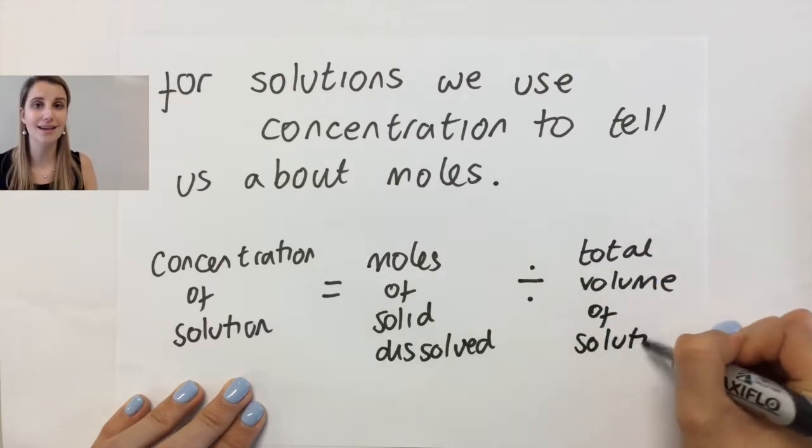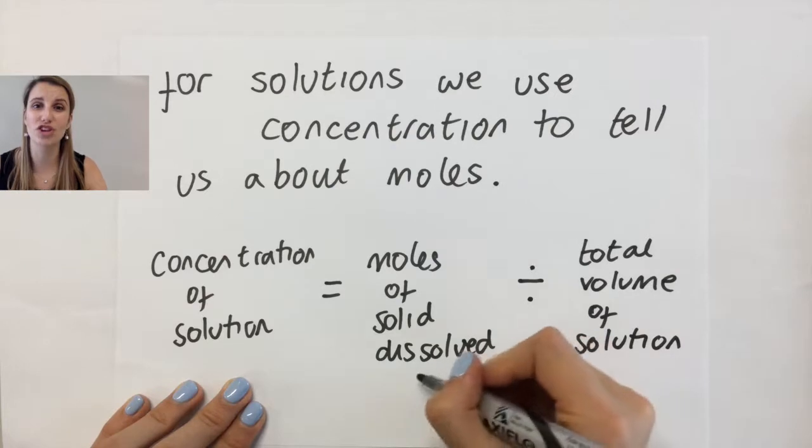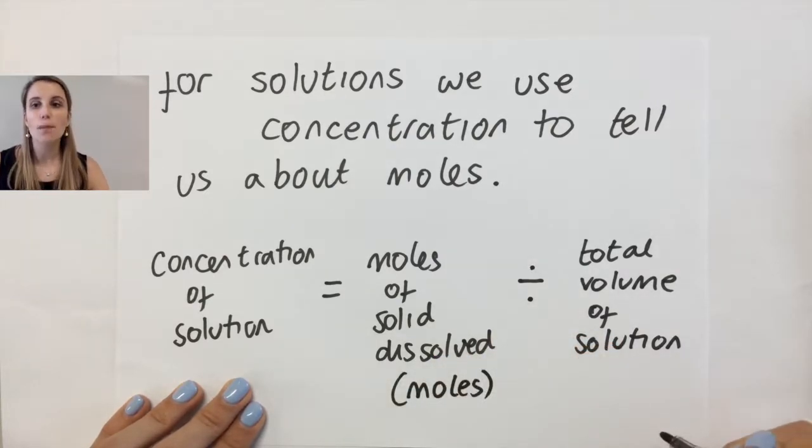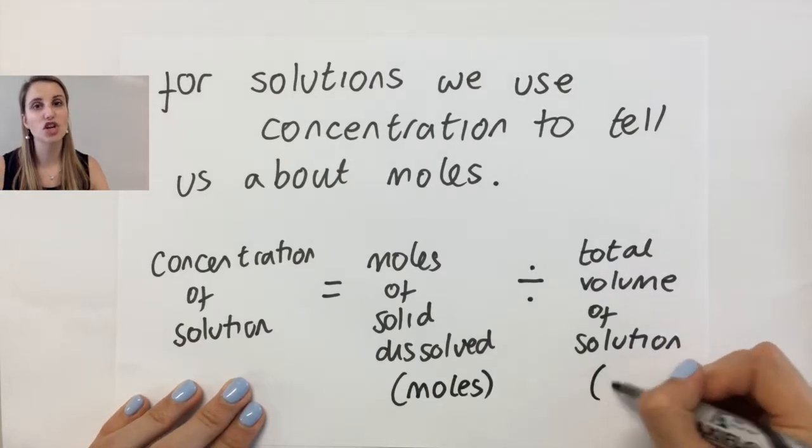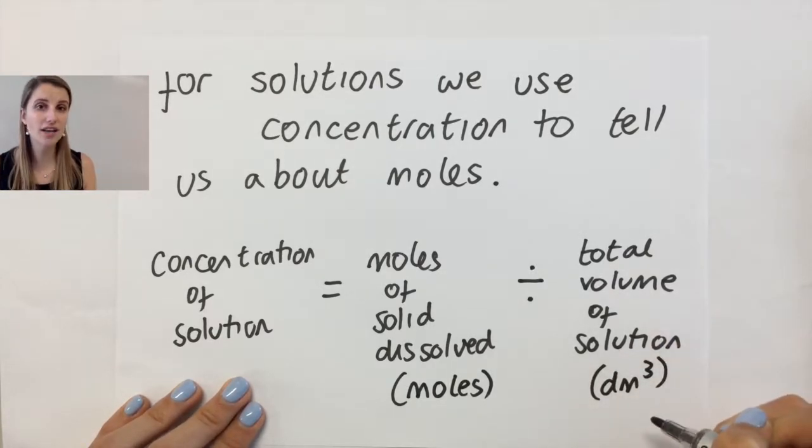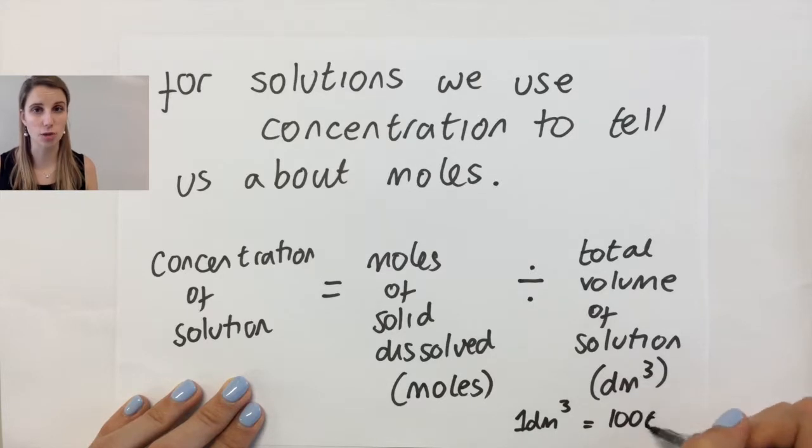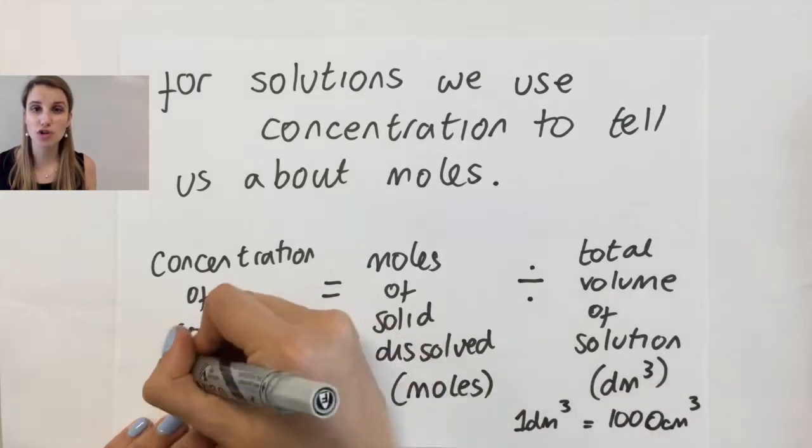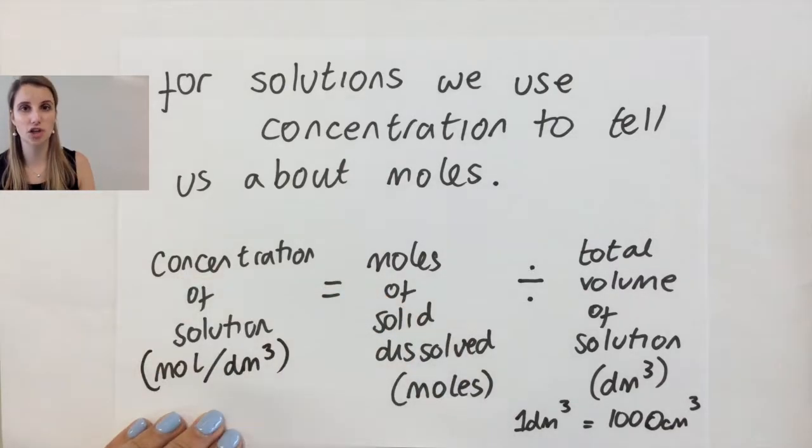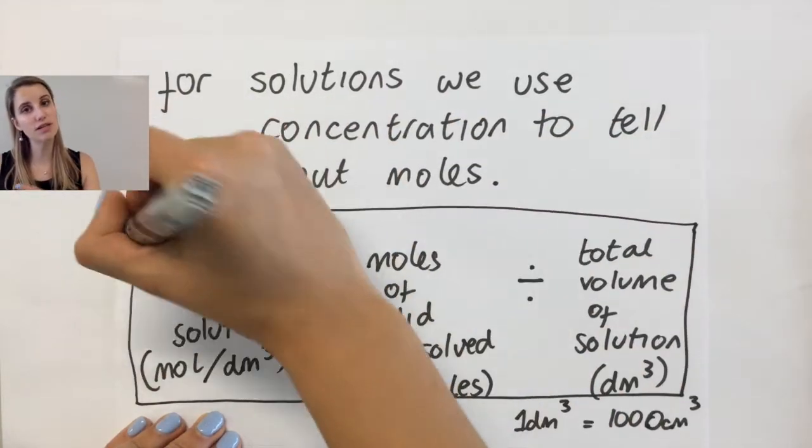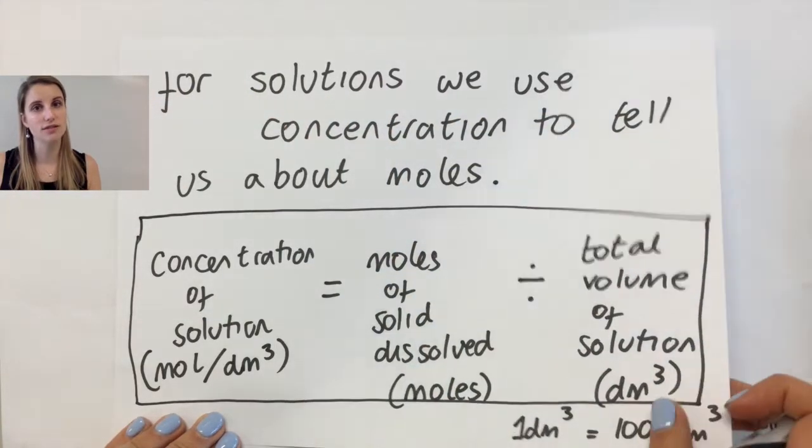Now the key part here is that you need to be really careful on the units. Because the moles of solid is in moles, but the total volume of solution you need to do in decimetres cubed, kind of like we did with the gases. So remember that one decimetre cubed equals a thousand centimetres cubed. That means that your units of concentration is moles per decimetres cubed. So how many moles of the solid are there per decimetre cubed of liquid that is now made?